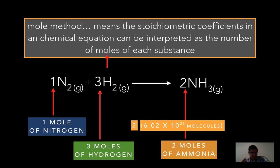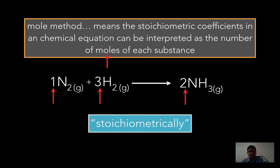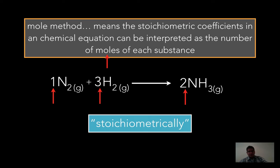This is very important in working stoichiometric problems, because each coefficient in a chemical equation represents the actual number of moles in that equation. This tells you how important it is to be able to balance equations. You can read this as: 1 mole of nitrogen gas combines with 3 moles of hydrogen gas to form 2 moles of ammonia gas. They are stoichiometrically equivalent.